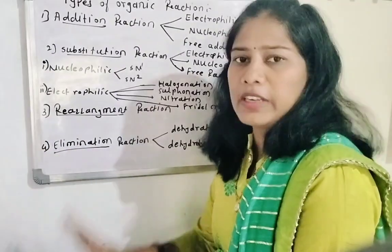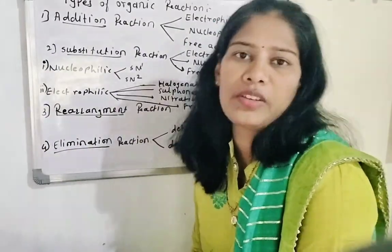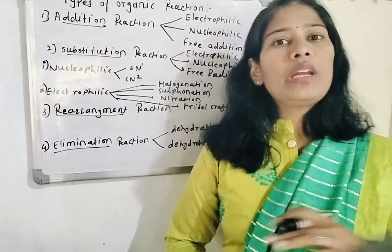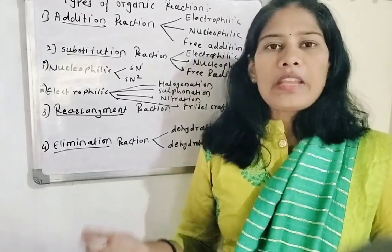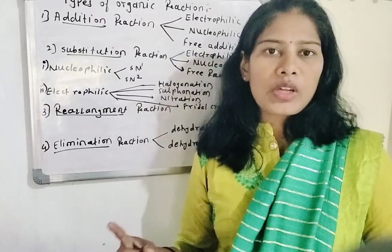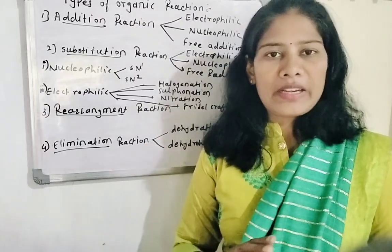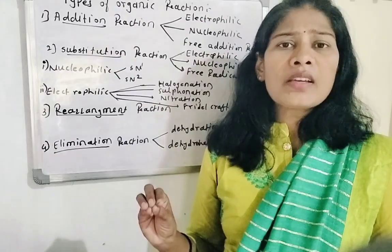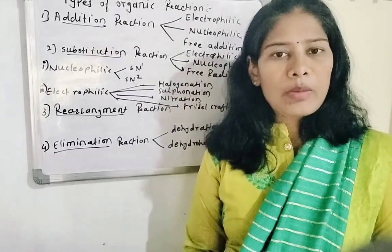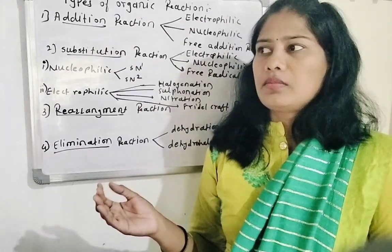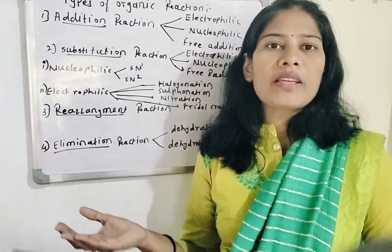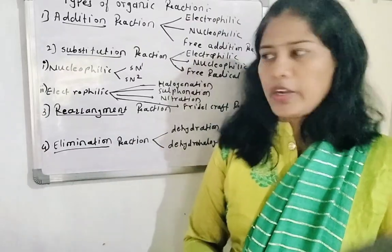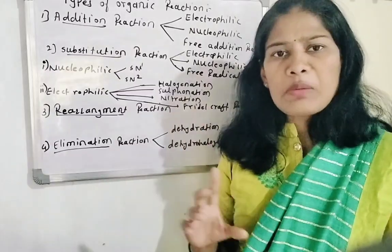The fourth type is Elimination Reaction. Elimination means to eliminate. In the reactant, if there is something extra, we eliminate it. So a single bond becomes a double bond, and a double bond becomes a triple bond. This is the Elimination Reaction — it means single bond makes double bond, by eliminating two atoms from adjacent carbon atoms.